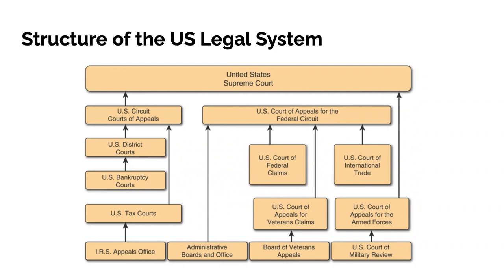Under the federal courts, there is one type that derives from Article 3 of the Constitution, consisting of District Courts, Circuit Courts of Appeal, and the U.S. Supreme Court. The two other types of Article 3 courts are the U.S. Court of Claims and Court of International Trade. Those do not have general jurisdiction.